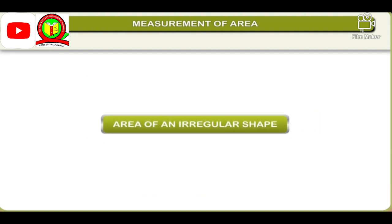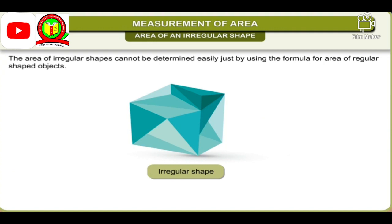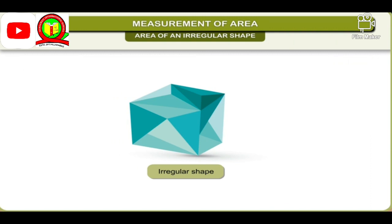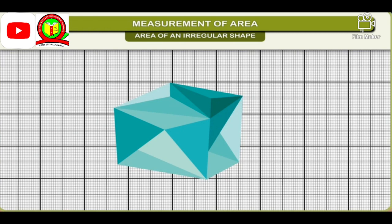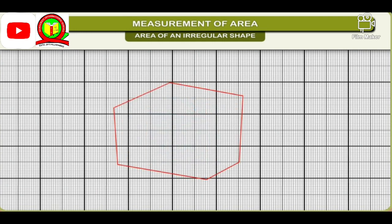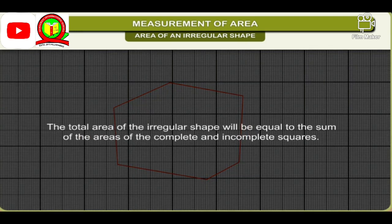The area of an irregular shape cannot be determined easily just by using the formula for area of regular shaped objects. The areas of such shapes can be found by using graph paper. We put the object of irregular surface on the graph paper and mark its outline with the help of a sharp pencil. Then we count the number of complete and incomplete squares. The area of incomplete squares is approximated to be half the area of a complete square. The total area of the irregular shape will be equal to the sum of the areas of the complete and incomplete squares.